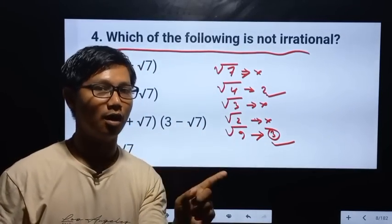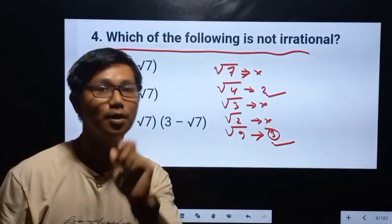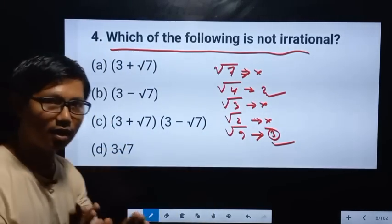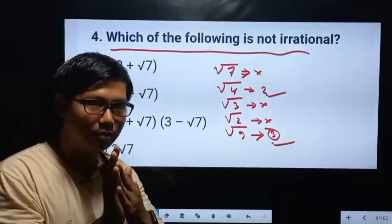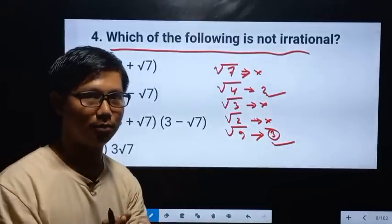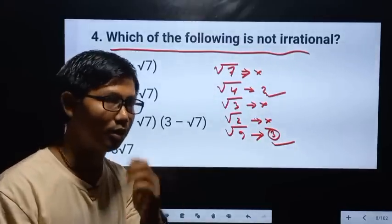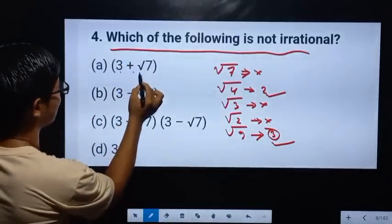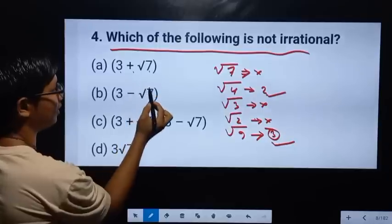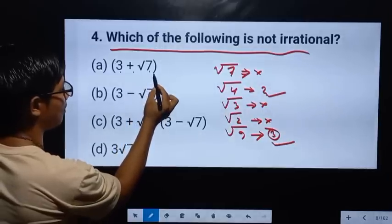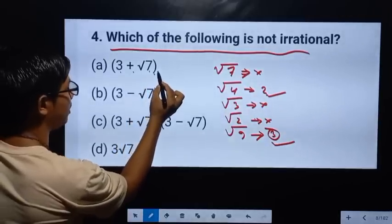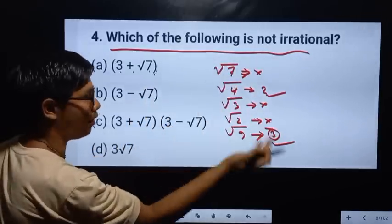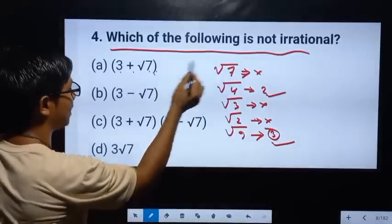This is not irrational. It is not a small one — it means that it is a small one. So, 3 plus under root 7 is a small one. We can say that it is a small one.